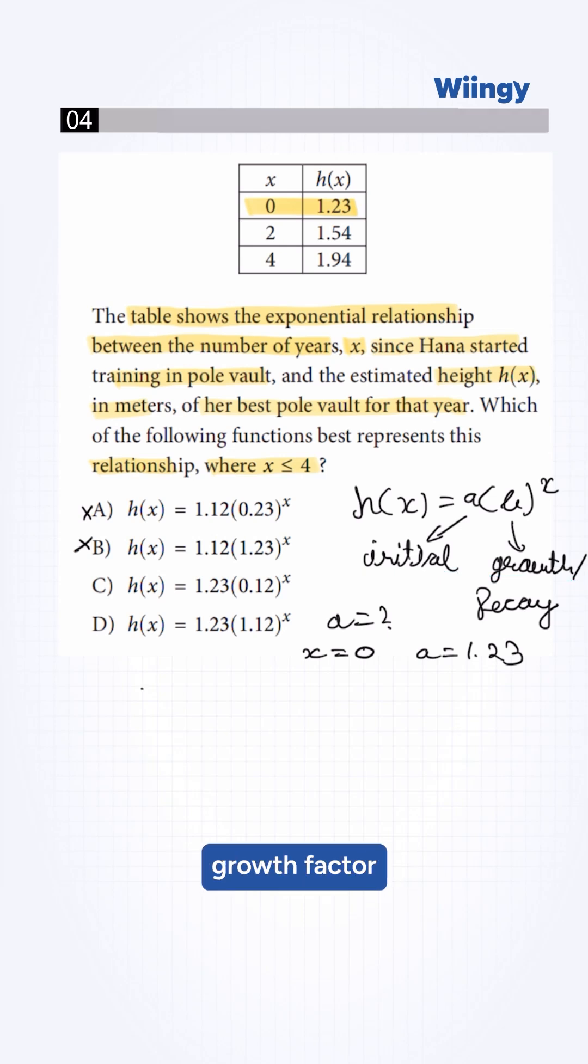Now, we need to find the growth factor b. We substitute a equals 1.23 and the second point 2 and 1.54 into the function formula.